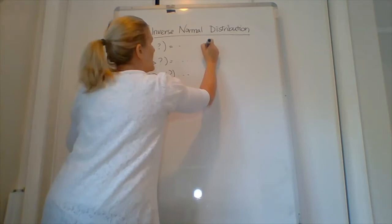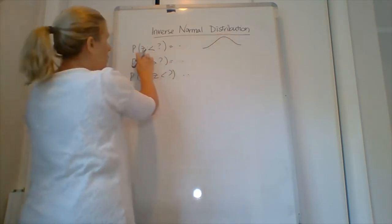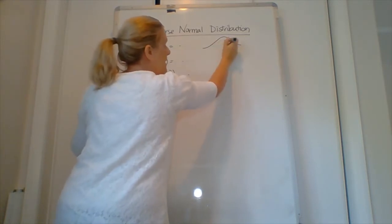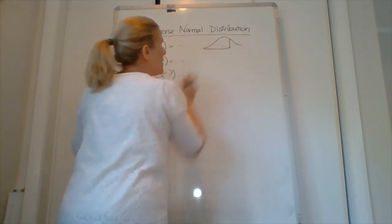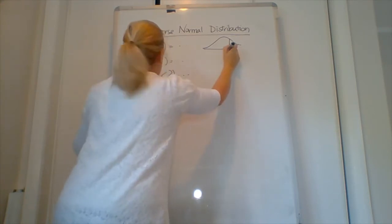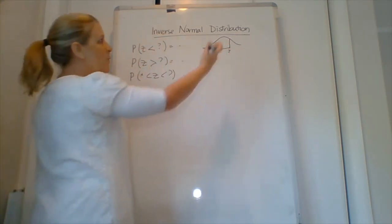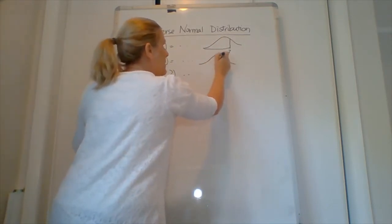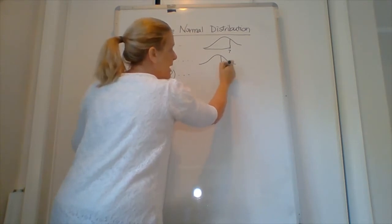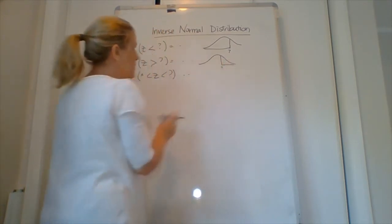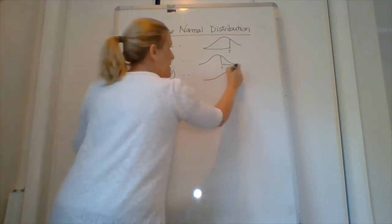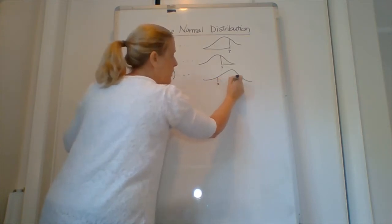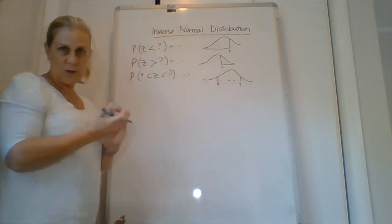Now the picture that goes with these is that we want to know what the probability. So if we've been given this as being less than this, we want to know what that value there is. What's the value that the probability is this way of it? This one, same thing but this time the question mark is here. It's greater than this. And of course in this one we've got two values. One which is given, one we want to know. And we've been given the probability of between those two.